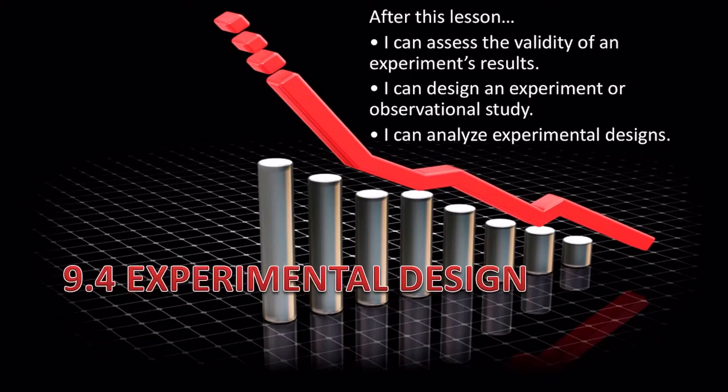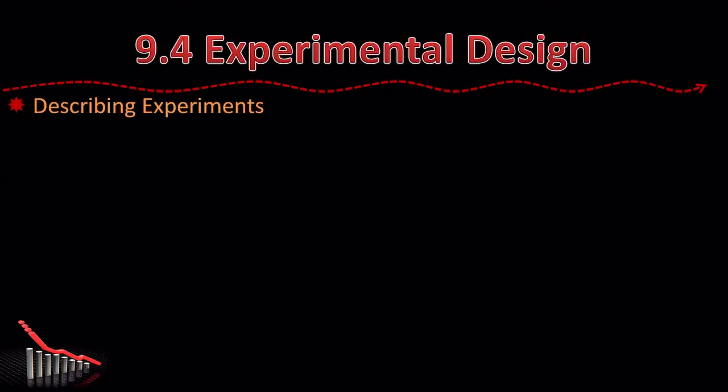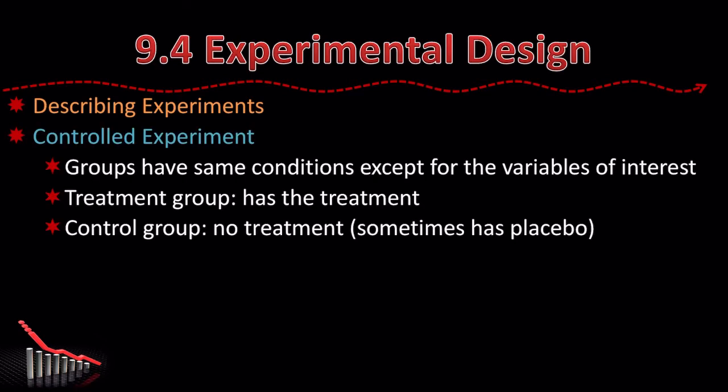Lesson 9.4, Experimental Design. So one type of study is experiments, and how do we design these experiments? We have two types. We have a controlled experiment, where groups are given the same condition except for the variable of interest.